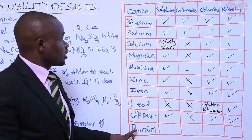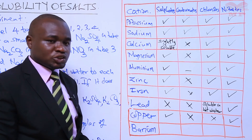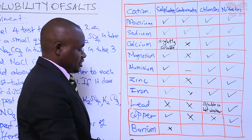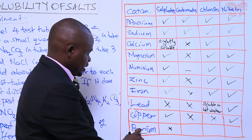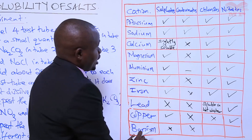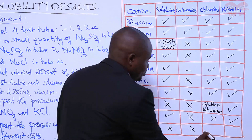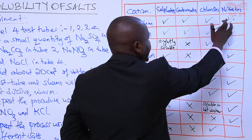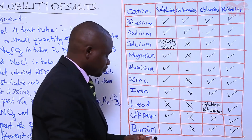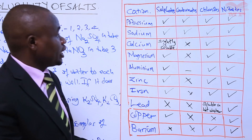Lastly, we have the salts of barium: barium sulfate, barium carbonate, barium chloride, and barium nitrate. Barium sulfate dissolved in water is insoluble — X. Barium carbonate is also insoluble — X. Barium chloride is soluble in water — tick. Barium nitrate dissolved in water is insoluble — X. These are the expected observations from the experiment we mentioned earlier.